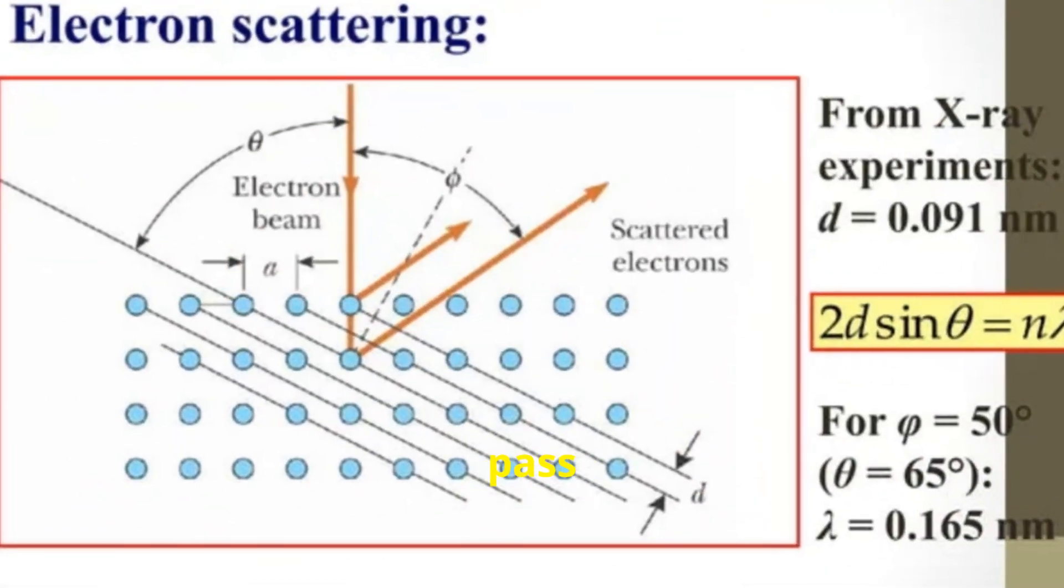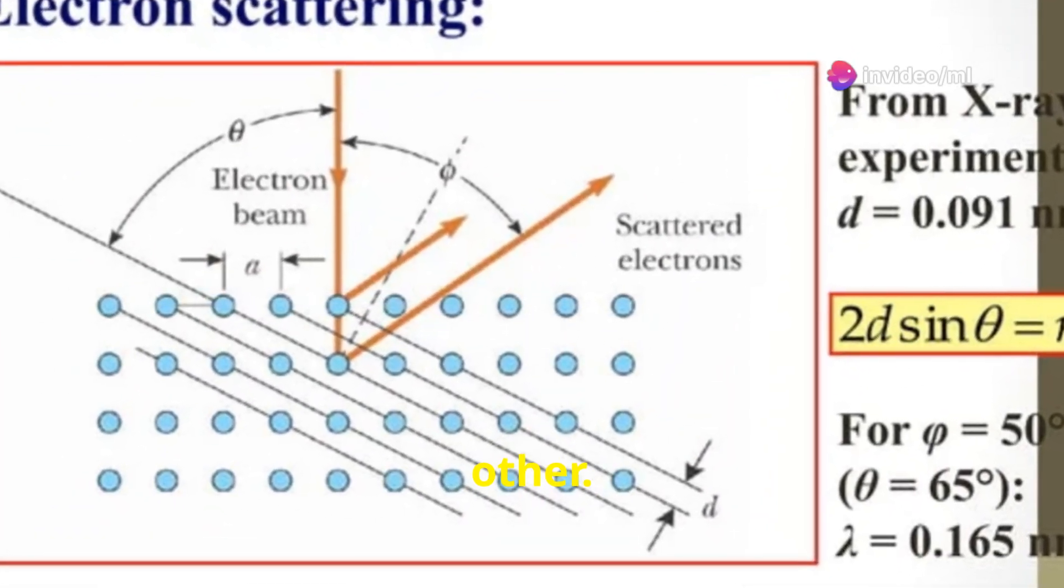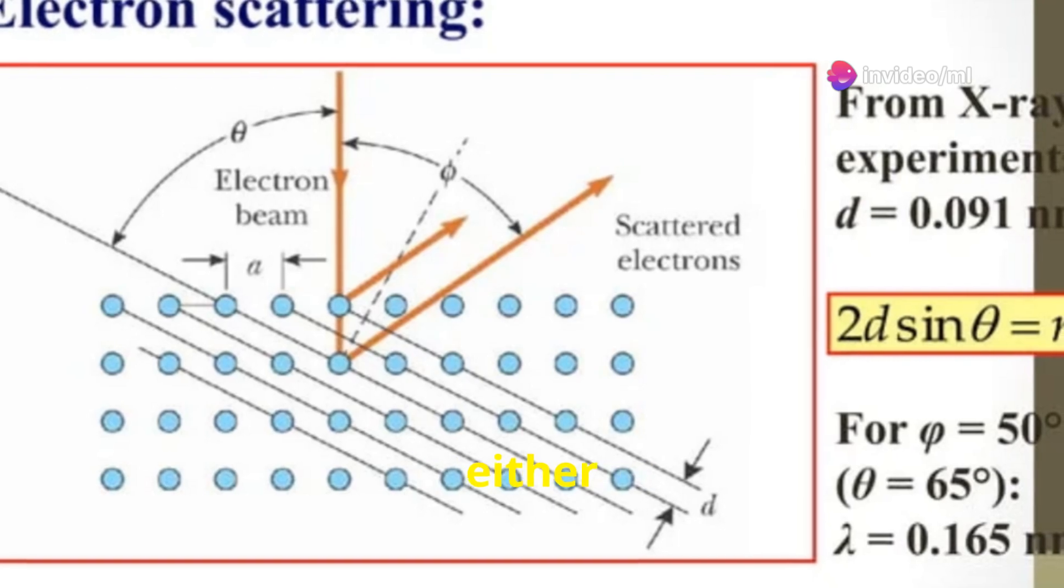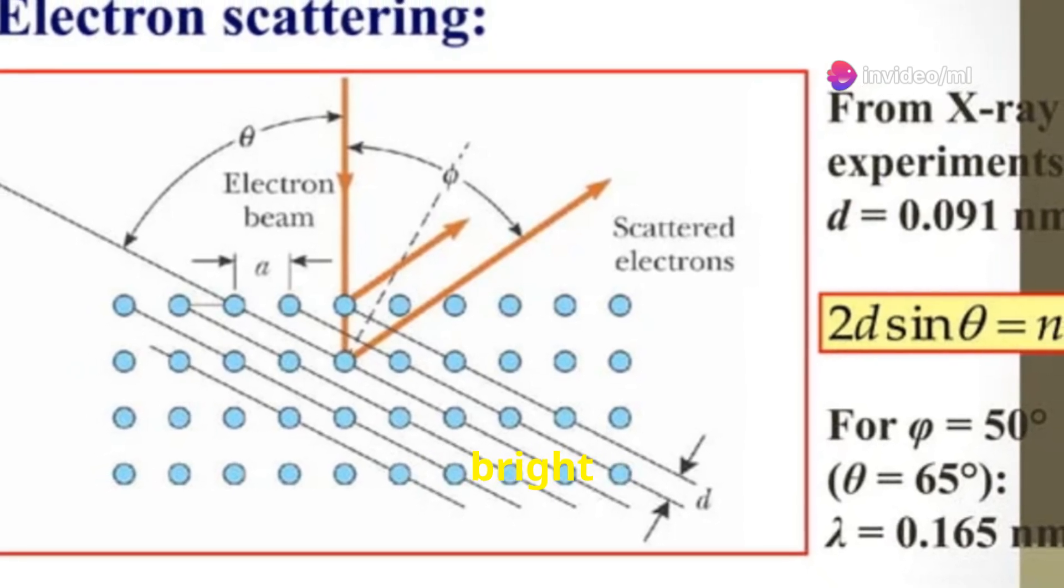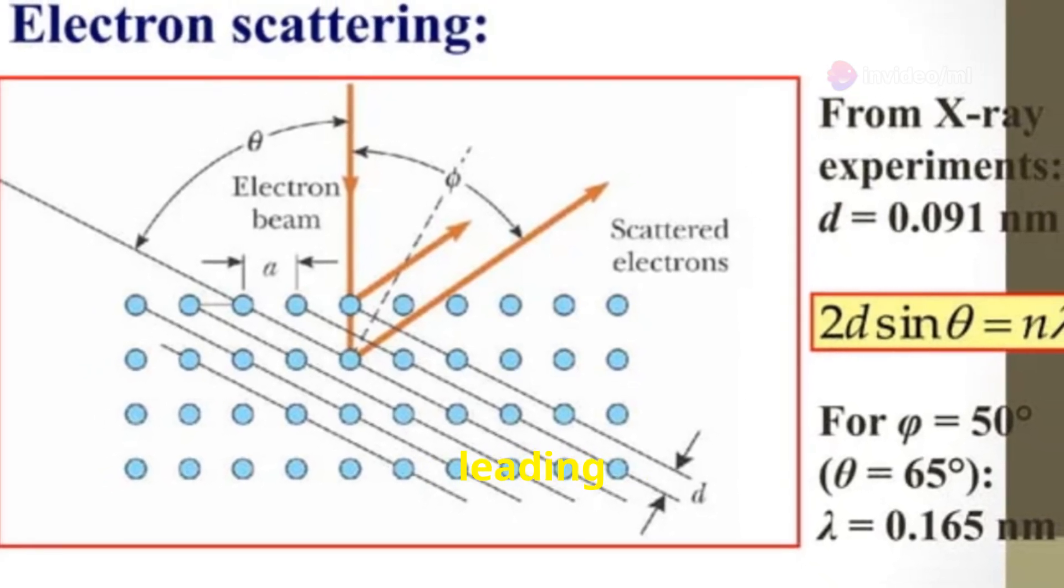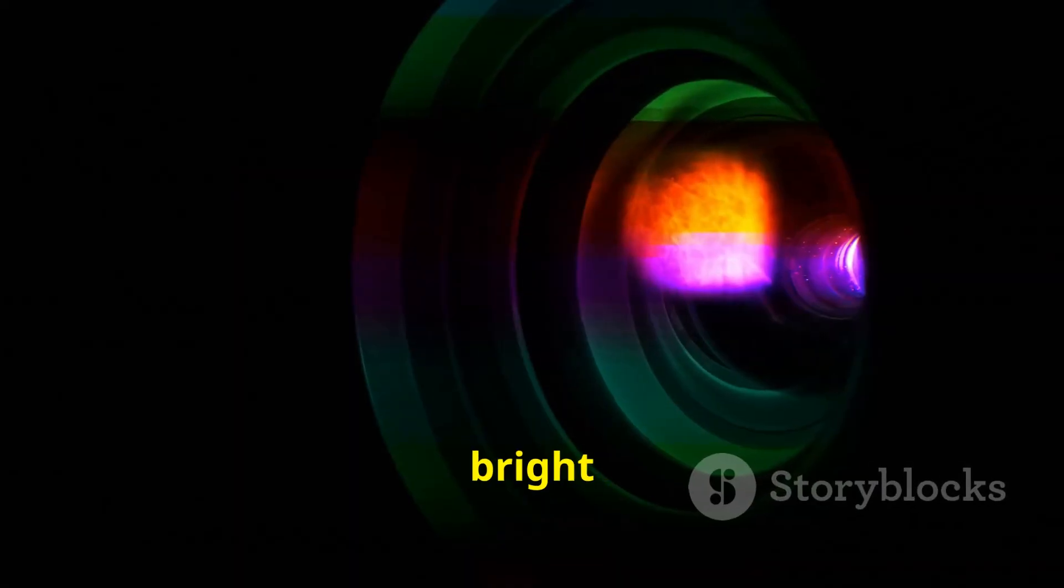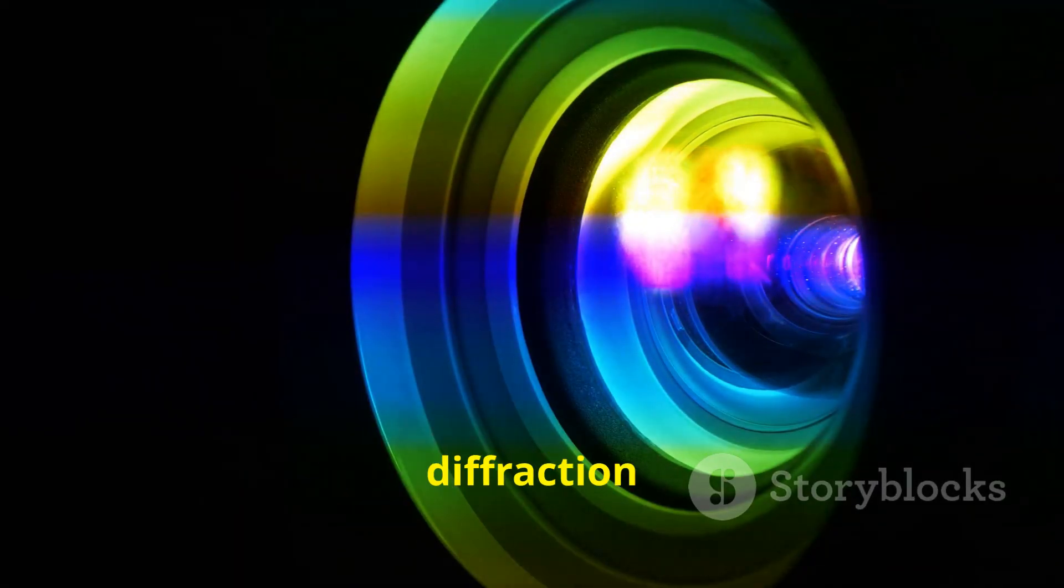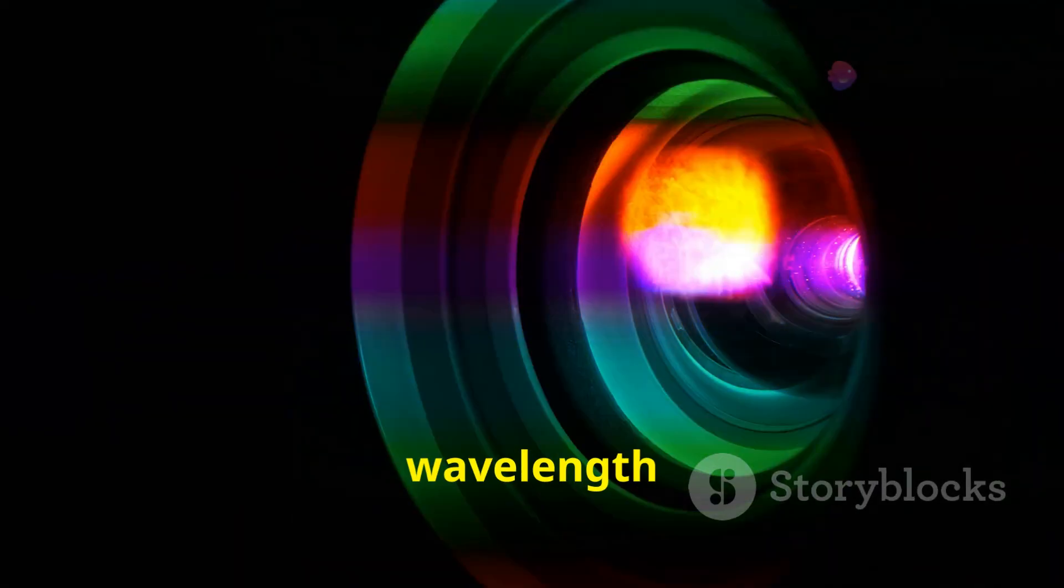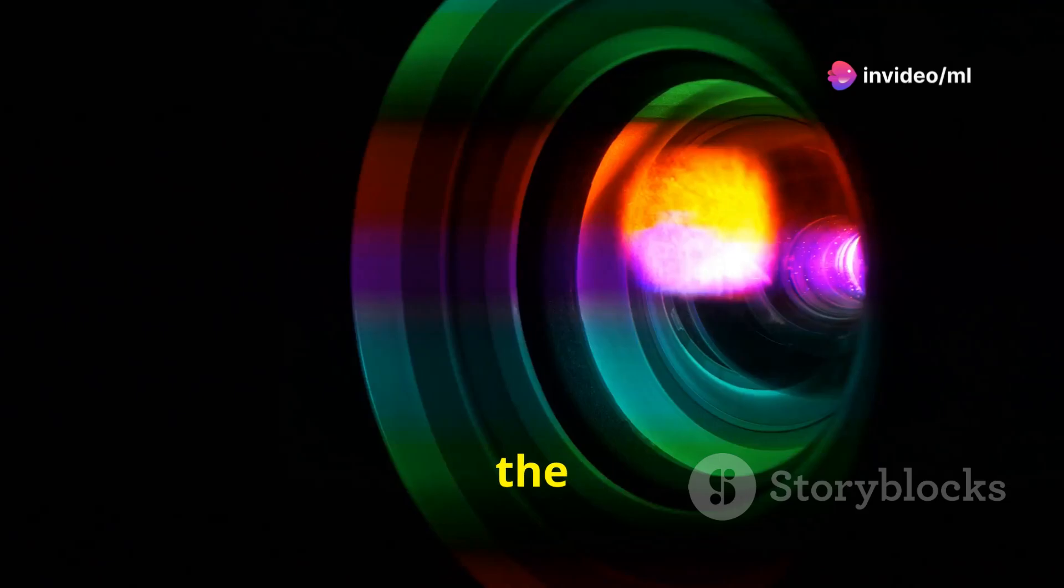When waves pass through a diffraction grating, they interfere with each other. This interference can be either constructive, resulting in bright spots, or destructive, leading to dark spots. The pattern of bright and dark spots, known as a diffraction pattern, is unique to the wavelength of the waves and the spacing of the grating.